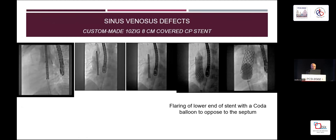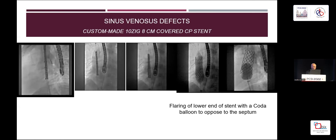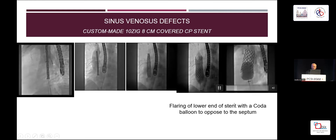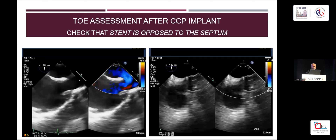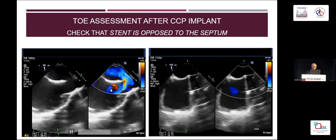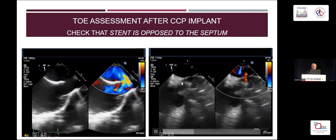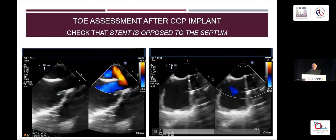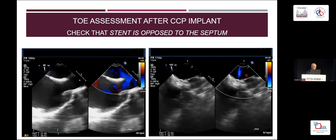Transesophageal echo evaluation is important to show that the pulmonary veins are patent. This is a tensig eight centimetre long covered CP stent. The advantage of a longer stent is that you may not need an anchoring stent, and there's a bit more stability. The inner bib balloon is inflated first, then after checking position the outer balloon is inflated. For occasional patients, flaring of the lower end is required using a coda balloon. TEE is essential to be sure the stent is opposed to the septum — any more flaring risks the stent flicking across the defect towards the left atrium, resulting in a residual shunt.